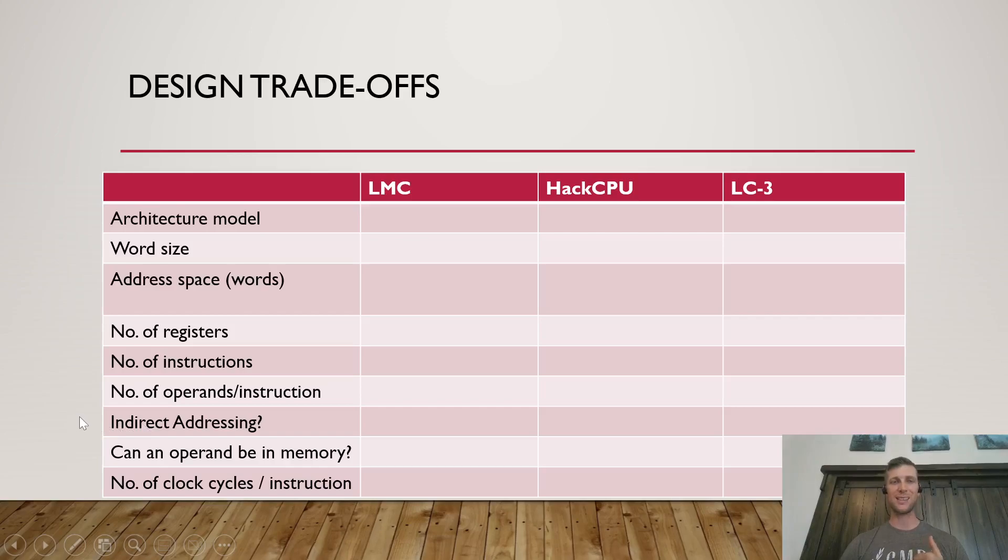This row here indirect addressing has to do with the fact that is there a type of operand or a type of addressing mode in the computer that lets a register or a value specify the address of the data to be grabbed. So that's sort of indirect. And then number two, can an operand be in memory? So this is asking in the computer itself is it possible to perform a single instruction where one of those operands is in the memory as opposed to in some sort of register or accumulator or does the architecture require arithmetic operations, ALU type operations to be performed on only values that are either in the immediate fields or in the registers.